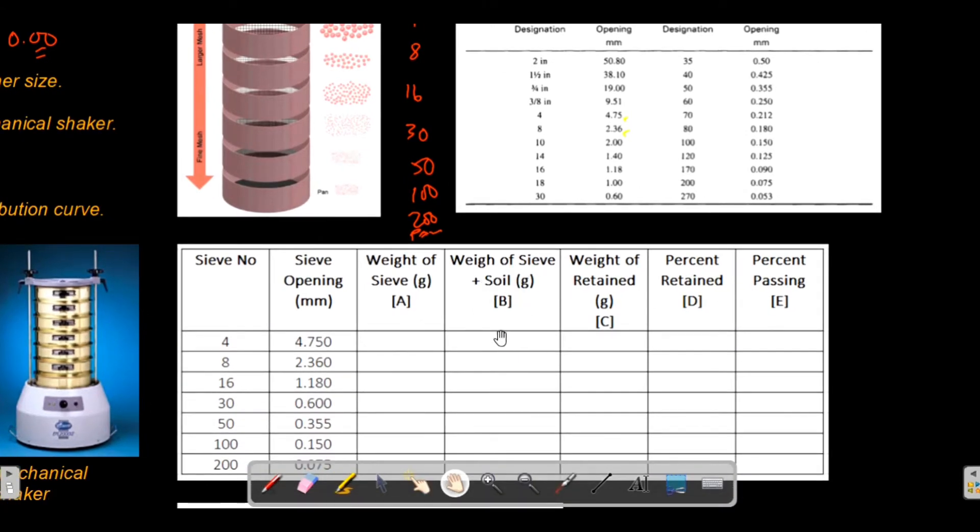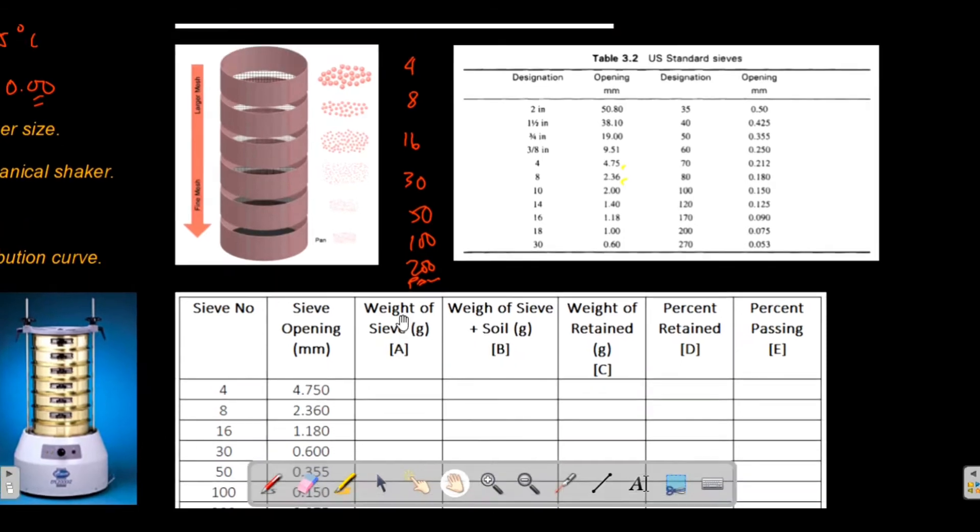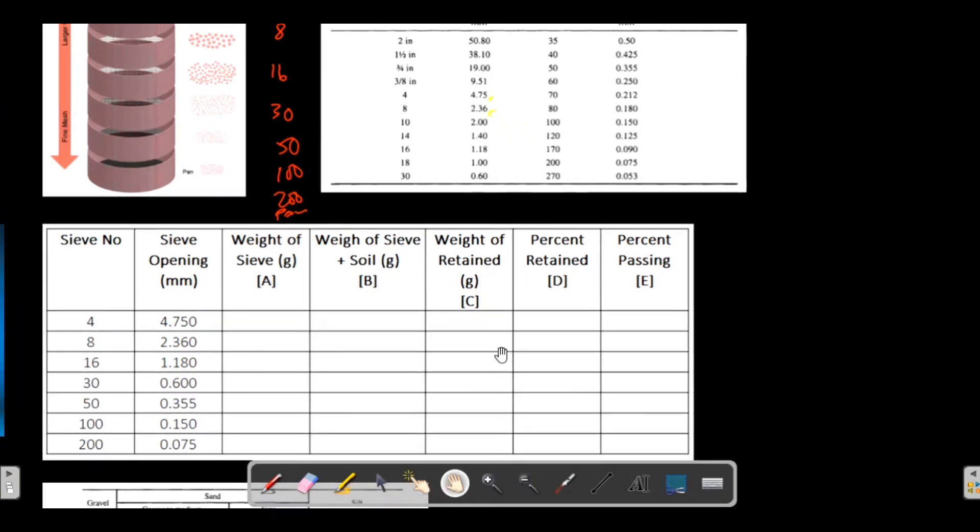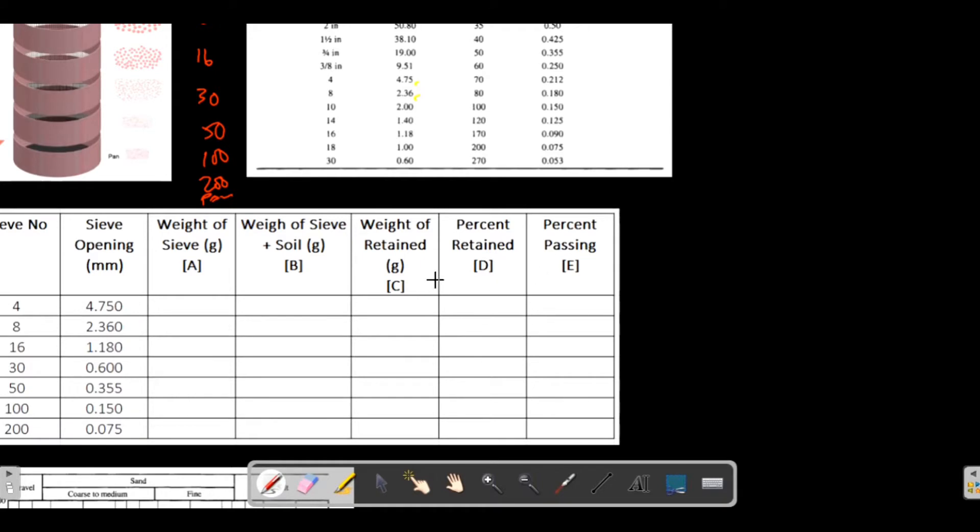You weigh the sieve with the soil that's retained on the sieve. Next is the weight of retained - how much soil is retained at a specific sieve. What you do is calculate C, which is just equivalent to B or the weight of the sieve plus soil minus your weight of the sieve. This is the equation for getting the weight of retained.